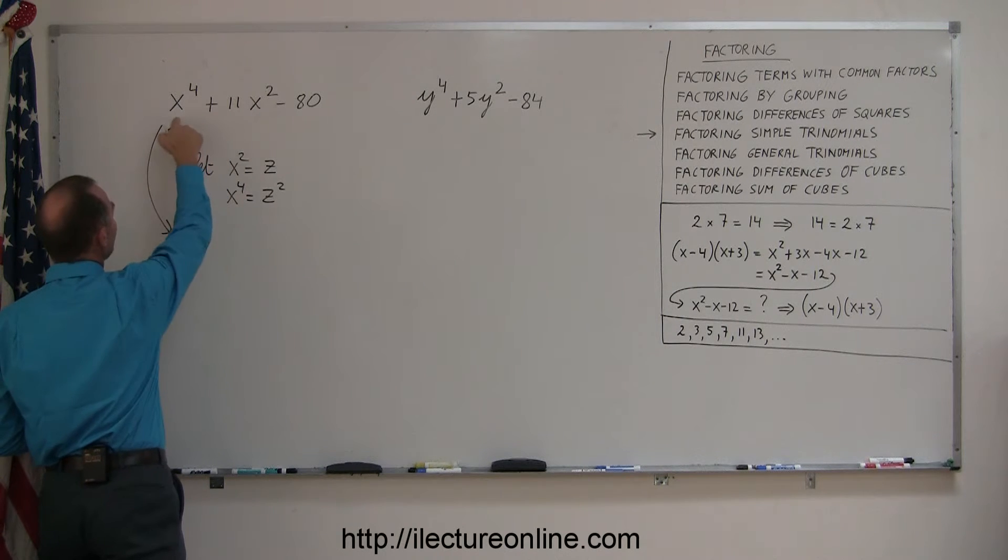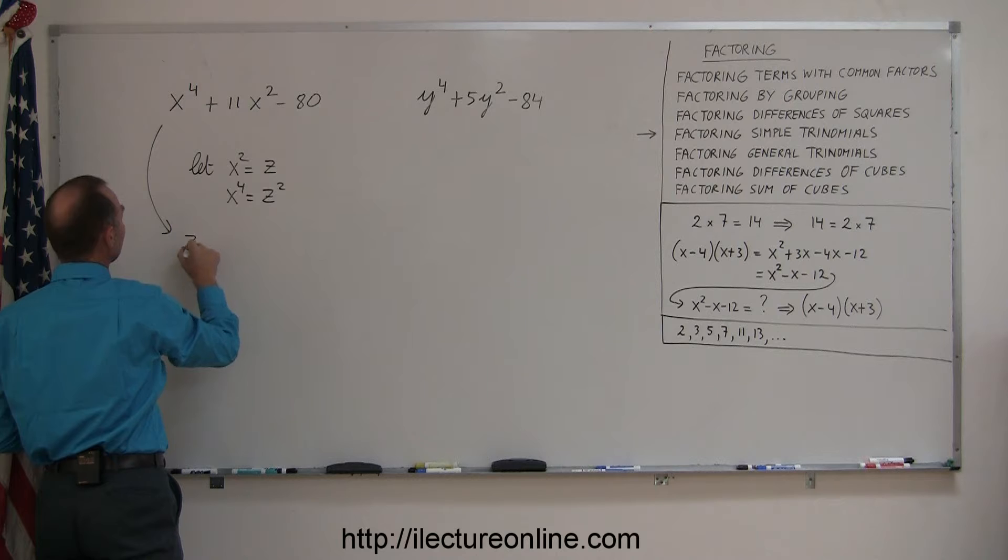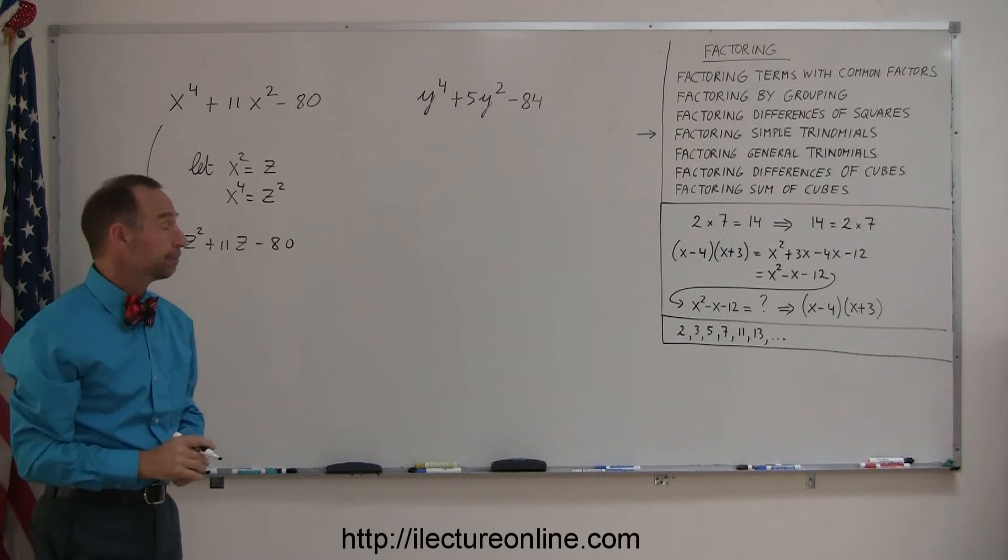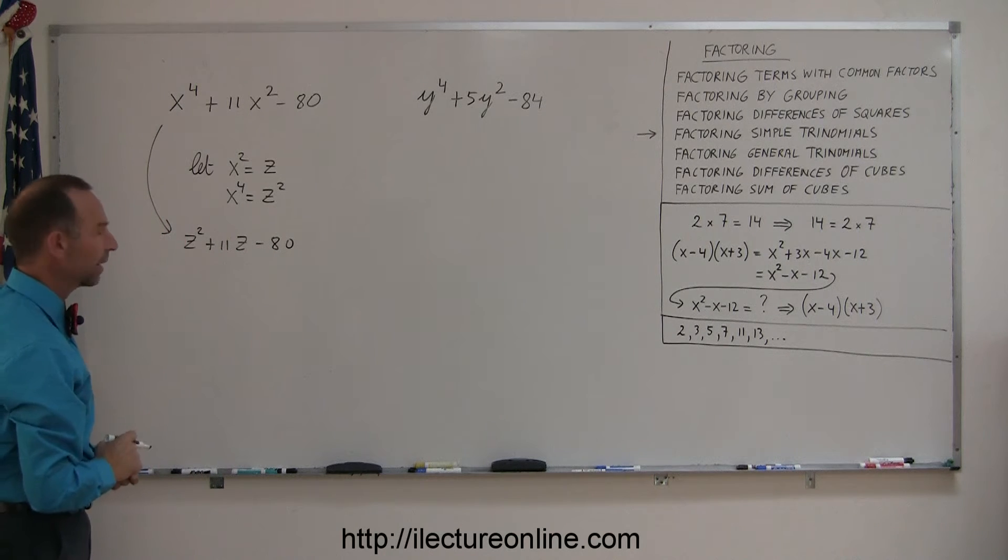So let's do that. Let's rewrite x to the fourth as z squared, plus 11, and instead of x squared we're going to write z. Now you end up with something that looks a lot more familiar, and that one you can factor. Later on we'll substitute back.